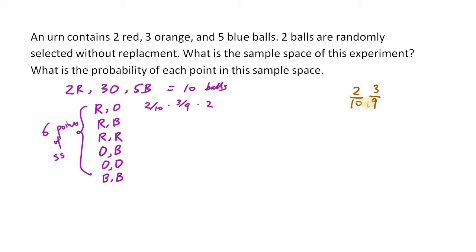Well, if the order does matter, then this will be the probability of getting a red ball and then an orange ball. However, since order doesn't matter, we also need to add the case where we get an orange ball first, which would be 3 over 10, and then a red ball second, which is 2 over 9. That's the answer for the first probability.